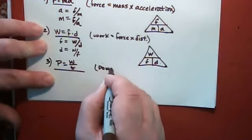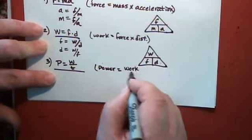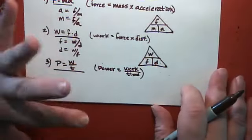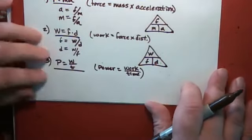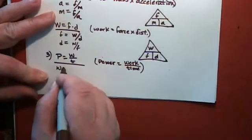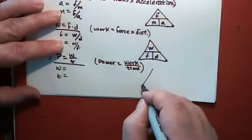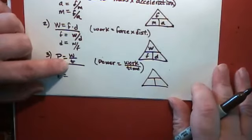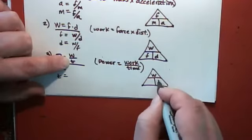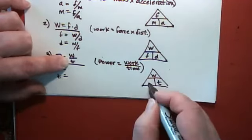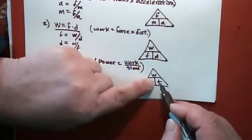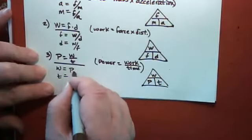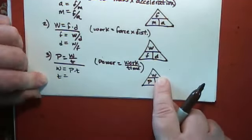Number three is P equals W over T — power equals work divided by time, or sometimes energy divided by time. In physics, energy and work are generally considered basically the same thing. Setting up the triangle: work over time means work goes in the top space and time goes in one of the bottom spaces, with power in the other. If you want work, cover it up and you have power times time; for time, cover it up and you have work divided by power.